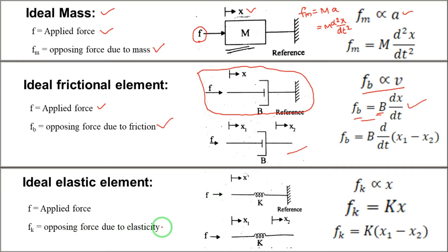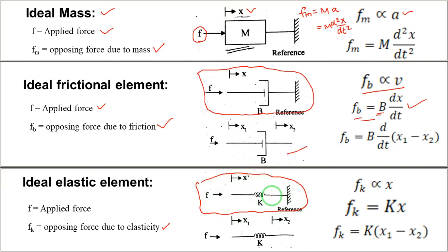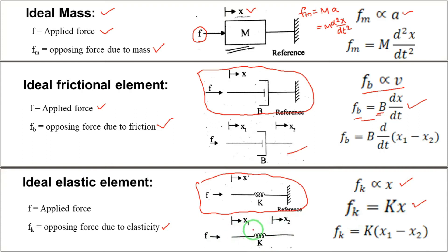Now coming to the elastic element, i.e., the spring element. The spring constant is indicated by K. The opposing force due to elasticity is F_K. If the spring is connected to the reference, then F_K equals K · x. If the spring is connected between two displacements x1 and x2, then F_K equals K · (x1 − x2).